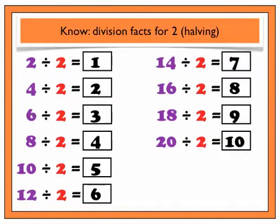Did you notice that there was no 0 divided by 2? That is because if I have no counters to start with, I cannot share any out. There was also no 1 divided by 2, as this would give you a half or 0.5. At this stage, we are only working with whole numbers.